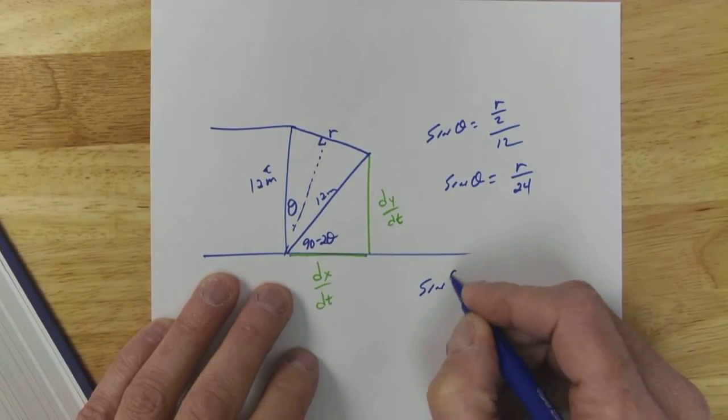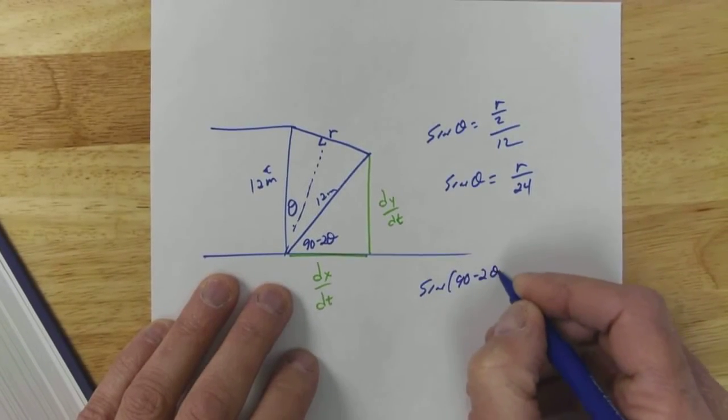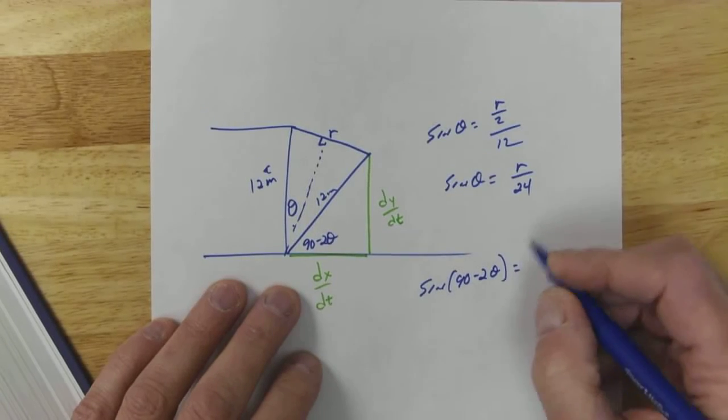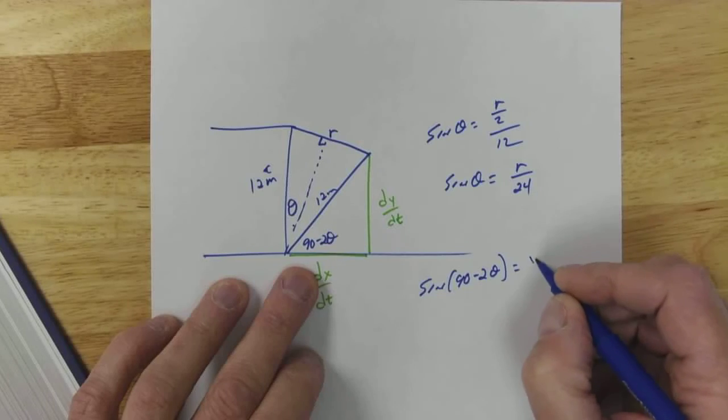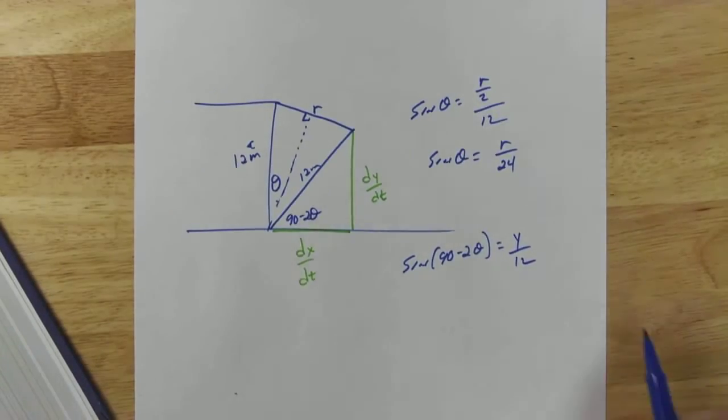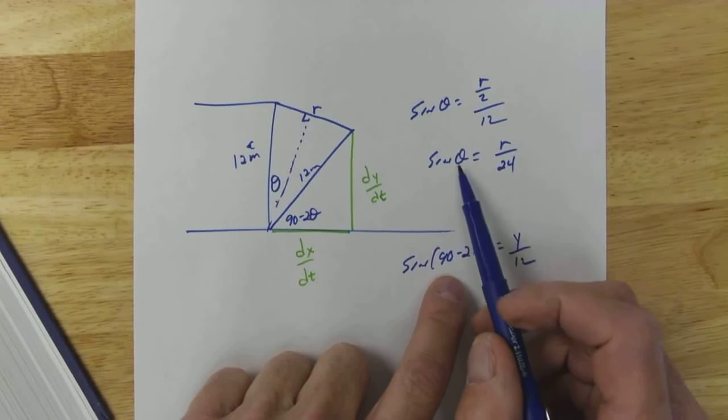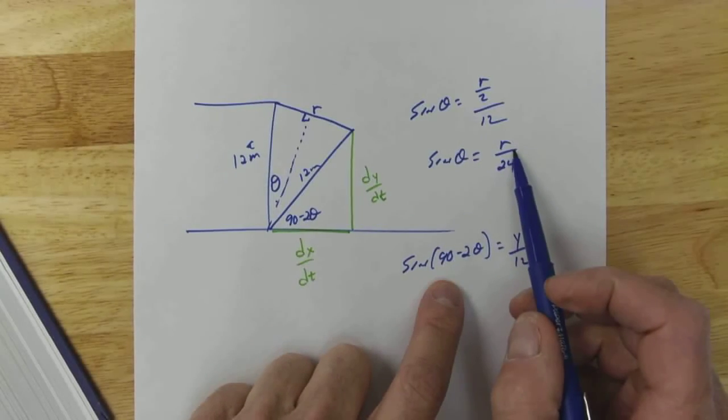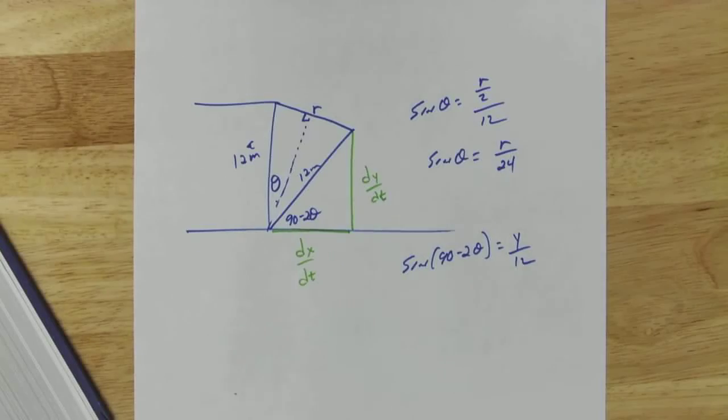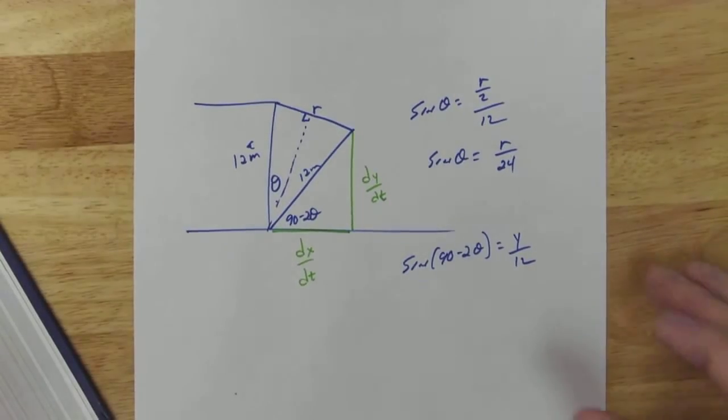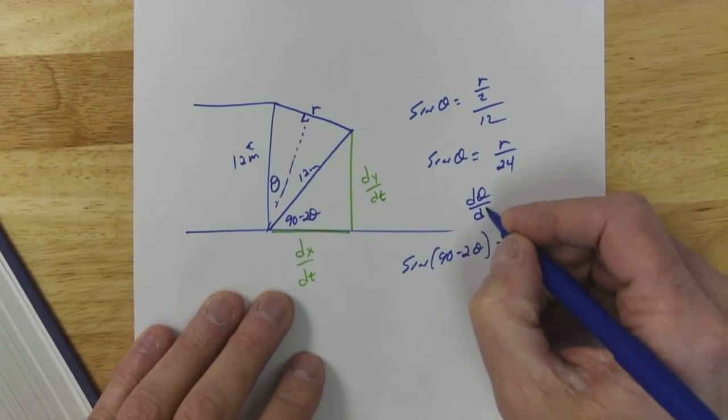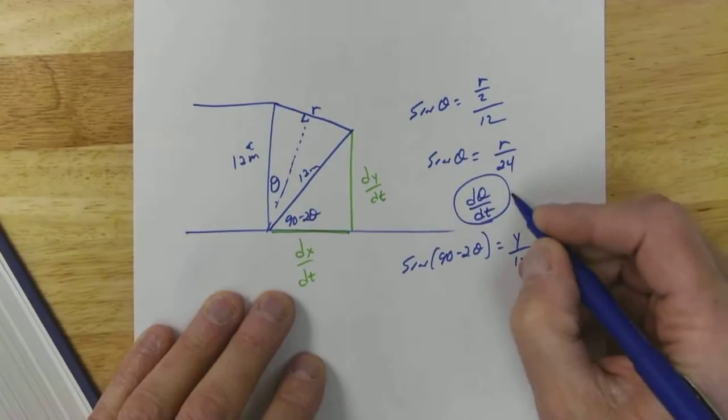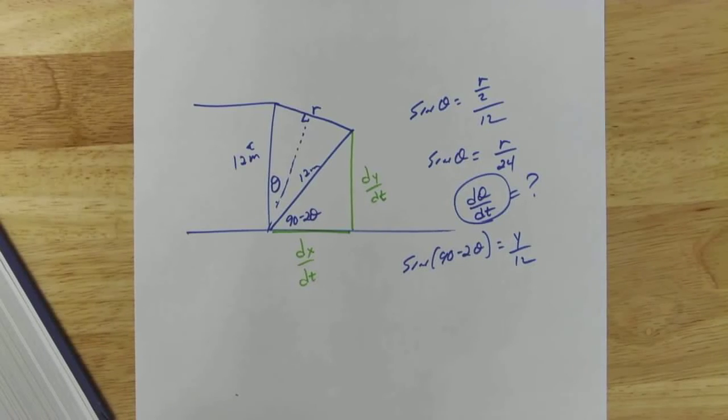So then we've got sine of 90 minus 2 theta equals y over 12. But then you can see that solving for this is going to be inverse sine and then we have to plug that in, oh this is getting uglier than ugly. So here's what I'm going to recommend: find d theta/dt, find that what does that equal, and then use that d theta/dt in this equation after you differentiate that.